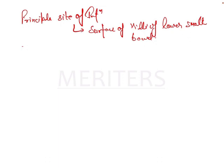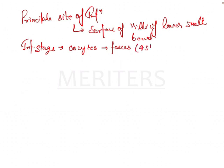The infective stage consists of oocysts seen in the feces, and they contain four sporocytes. Importantly, they can immediately infect a person and do not require further development for person-to-person transmission. The organism completes its life cycle in one host only, which is why it is known as monoxenous.